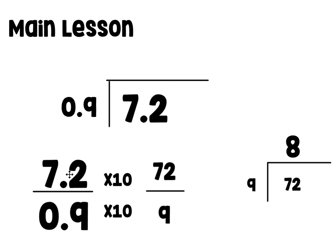To review: we started with 7 and 2 tenths divided by 9 tenths, wrote it as a fraction, then multiplied both the top and the bottom by 10. Remember, to find an equivalent fraction you have to multiply by a fraction equal to 1 — so you must multiply both the top and bottom by the same number, otherwise it would not be equivalent. We're multiplying by 10 over 10. When we multiply 7 and 2 tenths by 10 we get 72; when we multiply 9 tenths by 10 we get 9. Our equivalent whole number equation is 72 divided by 9, which equals 8.